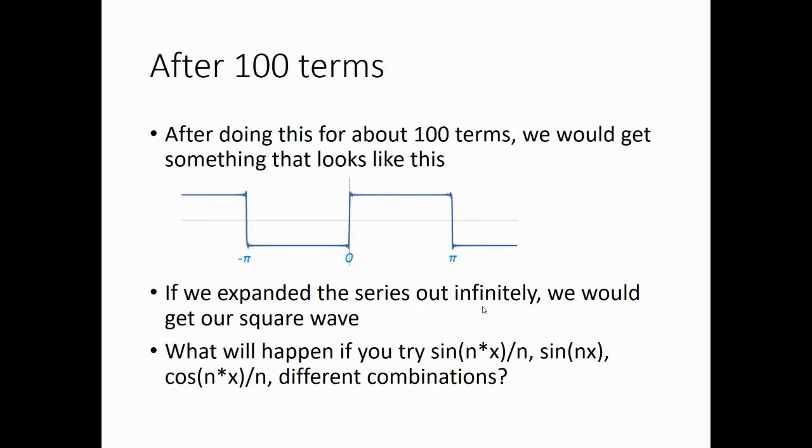After about 100 terms, you get something that looks like this. And you can see there's very little variation there. If we expand the series out infinitely, we would actually get our square wave. Now, what happens if you try this with sine of nx divided by n, sine of nx, cosine of nx divided by n, different combinations. I'm going to leave that last bullet point as an exercise, but you'll probably get some interesting functions.